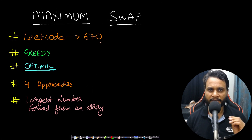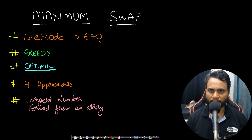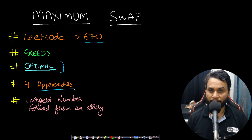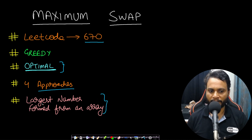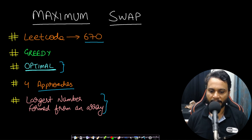Hello guys, welcome back to Tech Dose. In this video we will see the Maximum Swap problem, which is LeetCode number 670. We will be seeing the optimal solutions and we will be seeing four approaches including the brute force. After watching this video, you can consider watching the video on finding the largest number formed from an array — I will leave the link in the description below and in the info button.